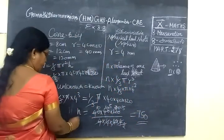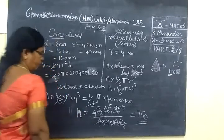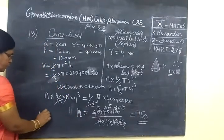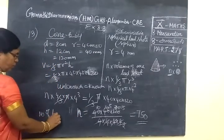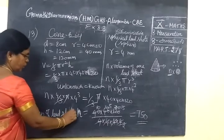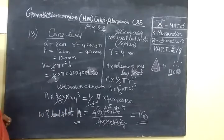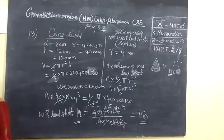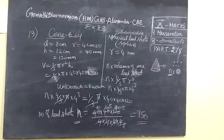Therefore n equals 750. So the number of lead shots equals 750.